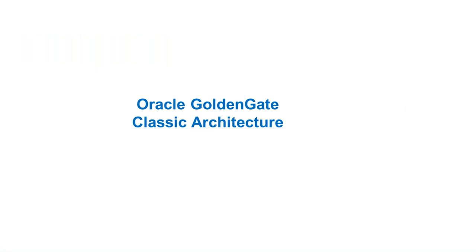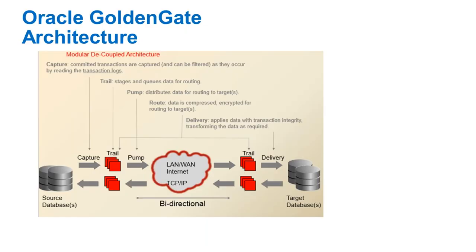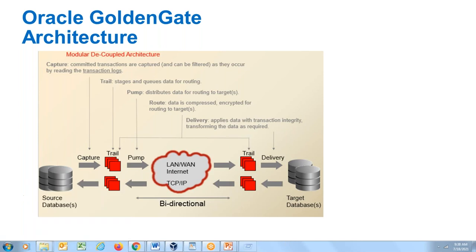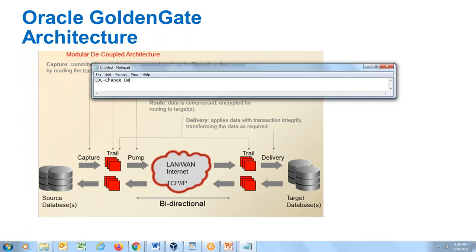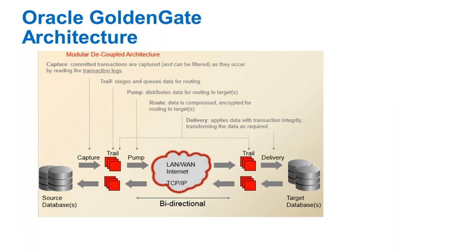Before proceeding, let's quickly discuss Oracle GoldenGate. GoldenGate is a replication tool that replicates data from a source database to a target database — whatever changes happen on source are replicated to target. It's a CDC (Change Data Capture) tool. Changes on the source database are recorded into transaction logs; GoldenGate captures only committed transactions from those logs.